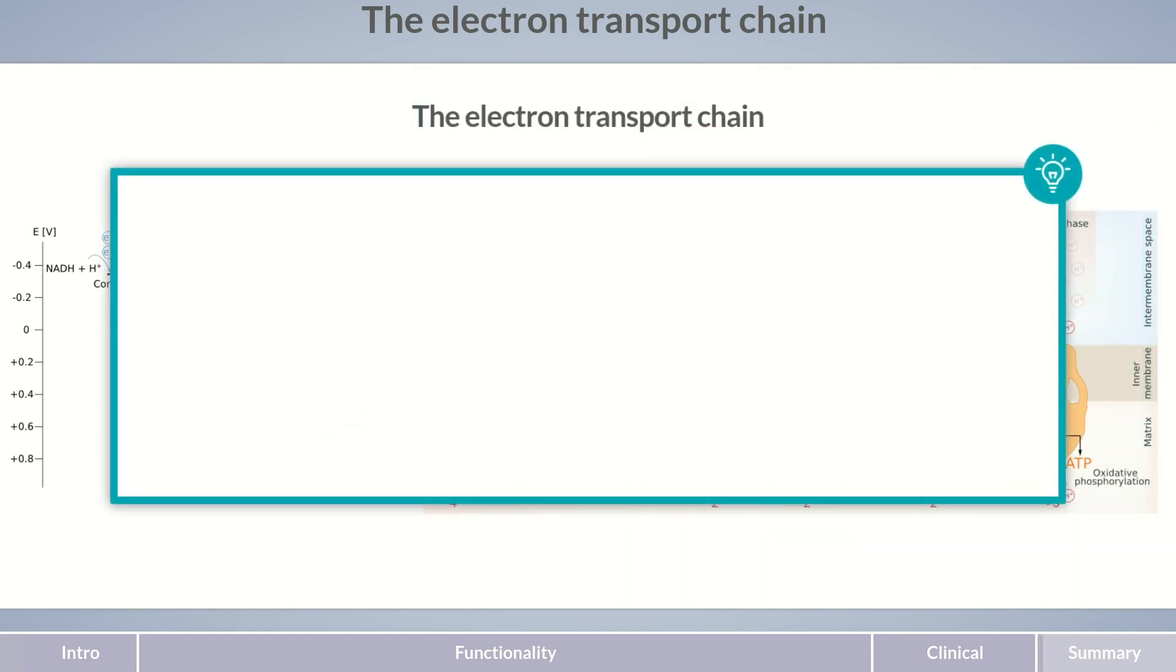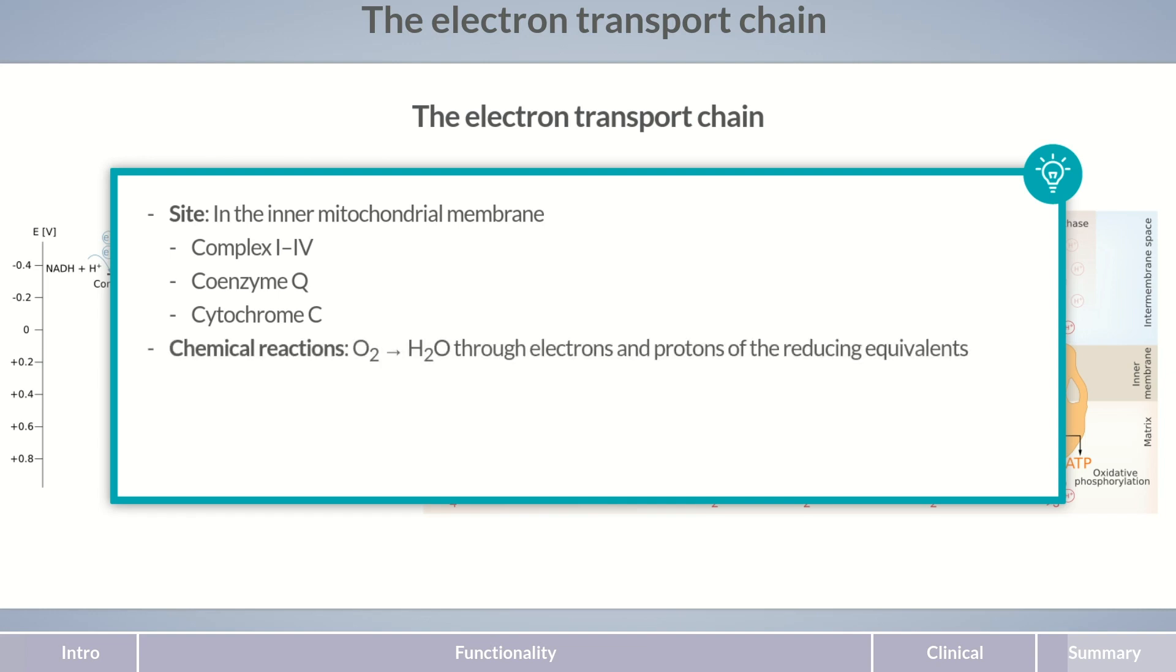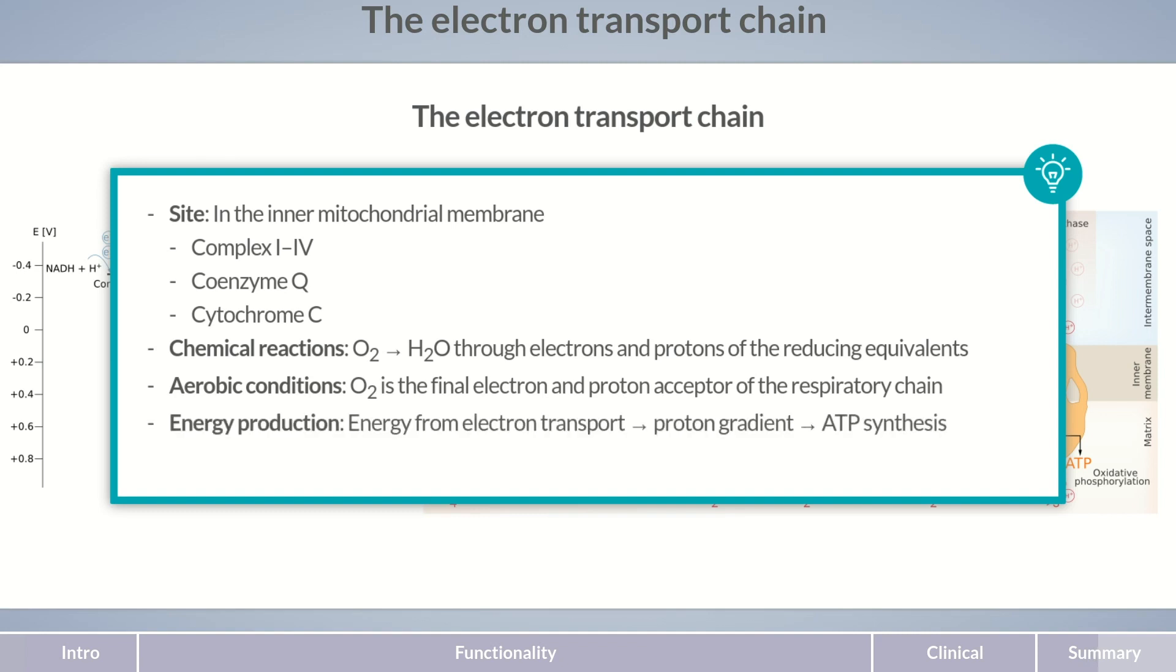Let's finish off by summarizing the most important aspects of the respiratory chain. The chain occurs in the inner mitochondrial membrane and comprises complexes I to IV, coenzyme Q, and cytochrome C. In the respiratory chain, the electrons and protons of the reducing equivalents NADH and H+, and FADH2 are used to produce water. The respiratory chain depends on oxygen, because it's the acceptor of electrons and protons in the final reaction catalyzed by complex IV. The energy released during electron transfer is stored temporarily in a proton gradient, which is used by ATP synthase to generate ATP. Through oxidative phosphorylation, 2.5 molecules of ATP are formed per NADH and H+, and approximately 1.5 molecules of ATP per FADH2.